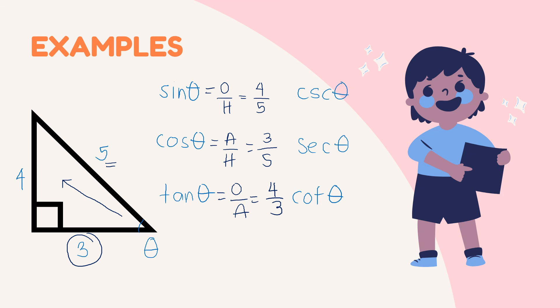Next, we have our cosecant theta. Cosecant theta is the reciprocal of sine theta, so you have 5 over 4. Secant theta is 5 over 3, and cotangent theta is 3 over 4. So these are our six trigonometric ratios.